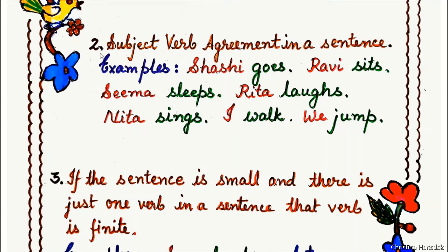Point number two: subject-verb agreement in a sentence. Meaning, in a sentence, the first place is of the subject, then the second place is of the verb — the sentence begins with a subject and is followed by a verb.